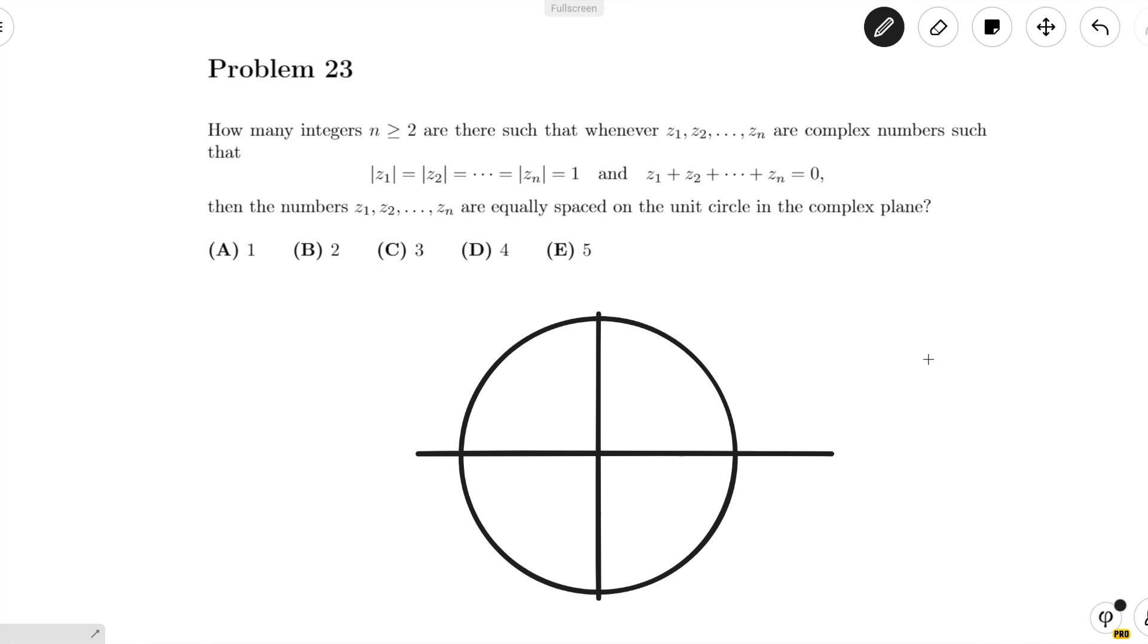Now the best way to attack this problem from here is actually to try values of n. So when n equals 2, if we take any z₁, since z₂ has to be on the circle and the sum of z₁ plus z₂ is equal to 0, that means that z₂ is on the opposite side of the circle as z₁.